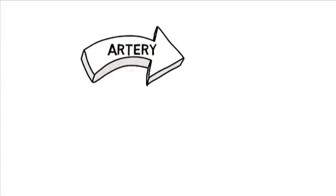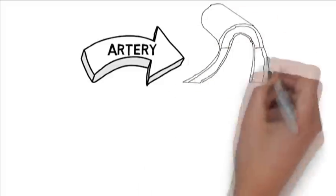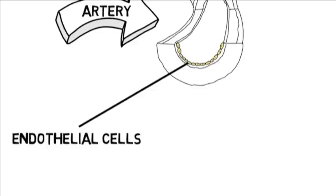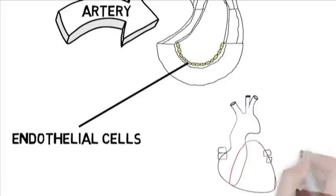Our bodies contain 6 trillion endothelial cells, which line 60,000 miles of blood vessels in a single layer. Together those 6 trillion cells make up an organ known as the endothelium, which is one of the largest organs in the human body.